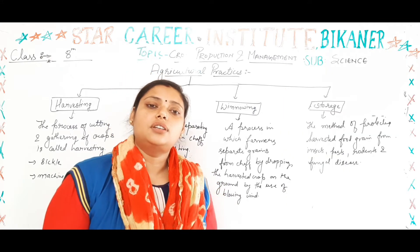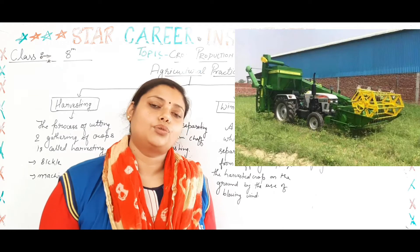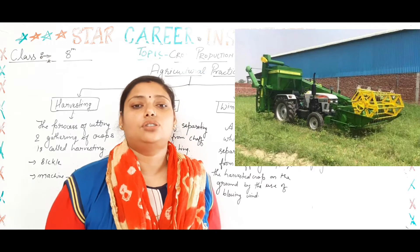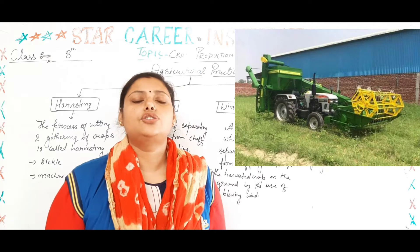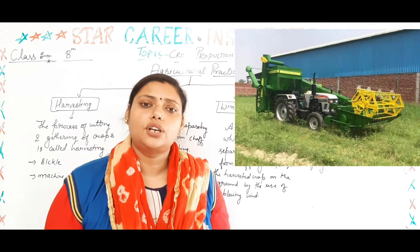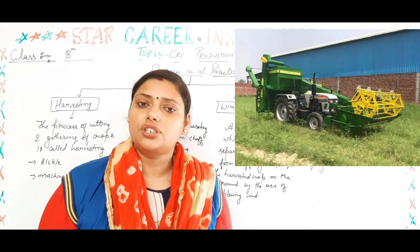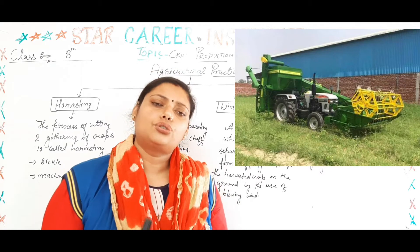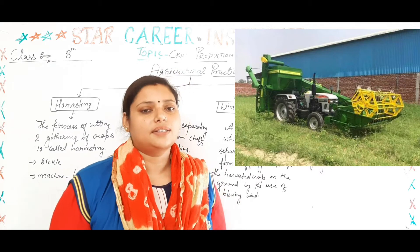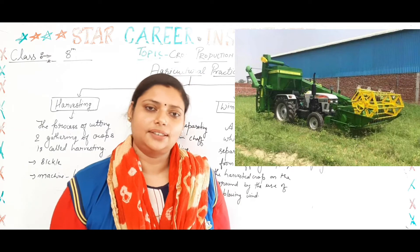The machine used for threshing is called a thresher. Generally, a combined machine is also used. The process of separating grain seeds from chaff is called threshing, and the thresher machine makes this easy to do.